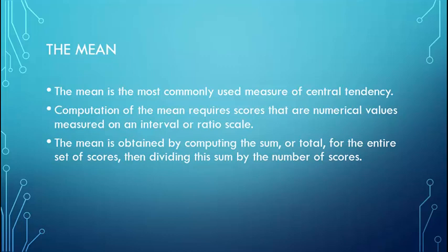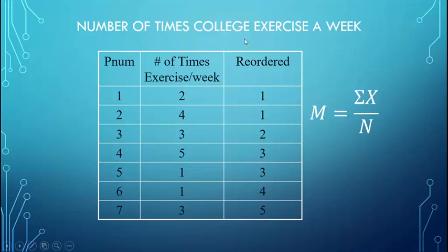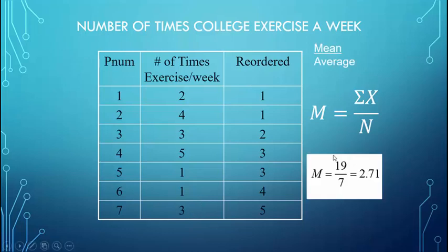The mean is the most commonly used measure of Central Tendency for score data. You need interval or ratio data. To find the mean, you add up your scores and divide by the number of scores. Like if you took three midterms, you add them up and divide by three. SPSS does this for you. In our exercise example, you add 2+4+3+5+1+1+3, divide by 7, and get a mean of 2.71.